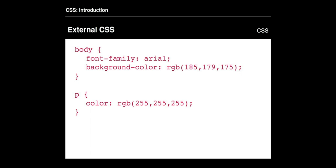Here is another example of applying a font family and a background color to the body, and then applying a color to the paragraph styles. The font family is Arial — you can add more by adding a comma for backup. For colors, we can use hex values, RGB (red, green, and blue), HSB, or you can just type a color name like white or black, though that only works for a certain number of colors.